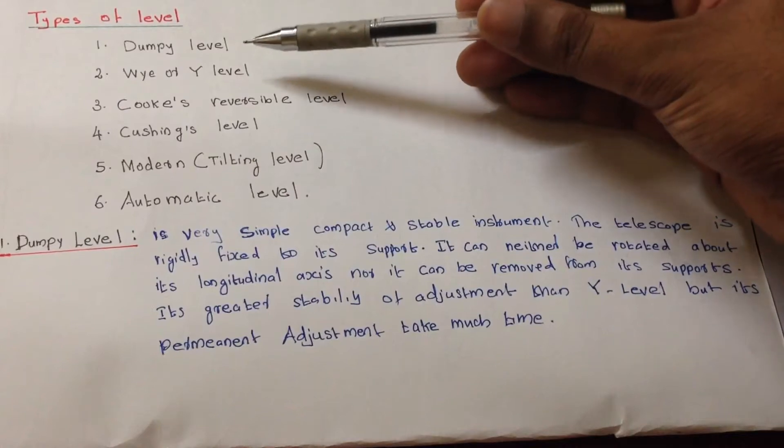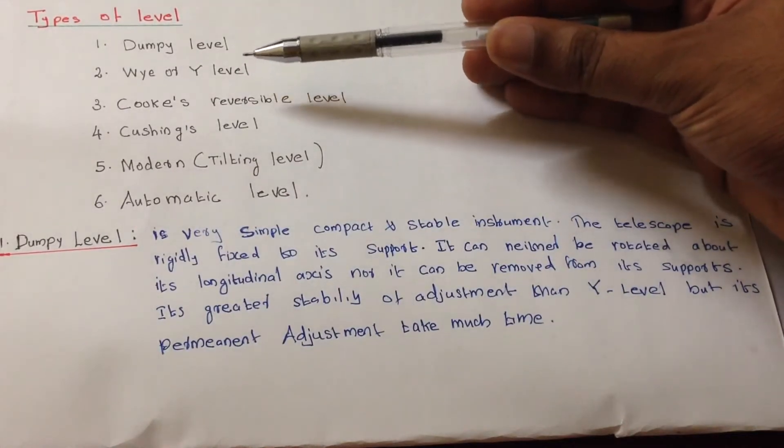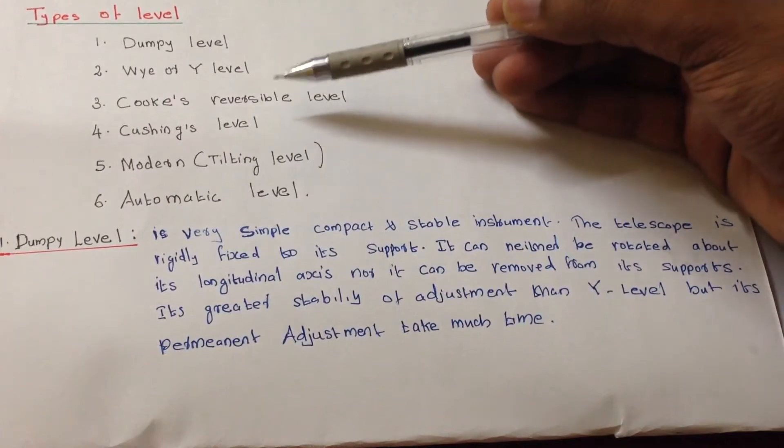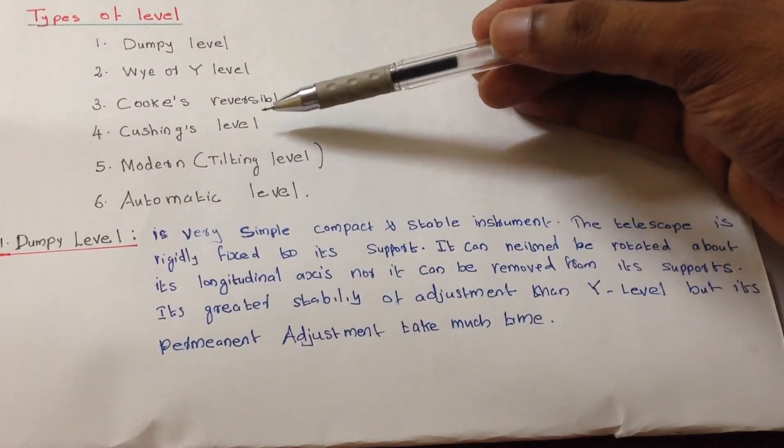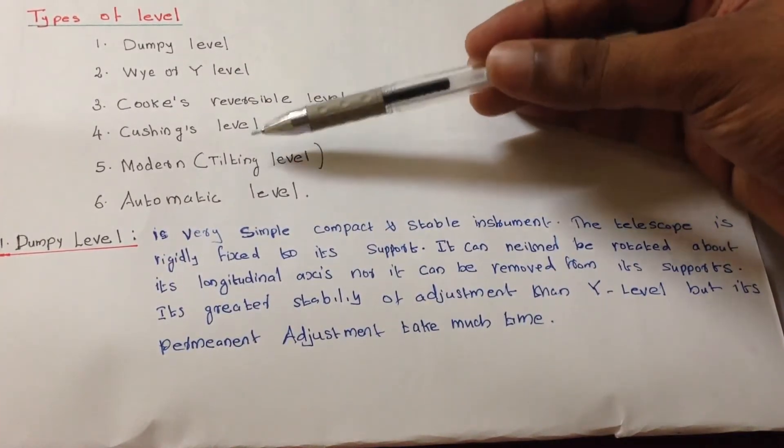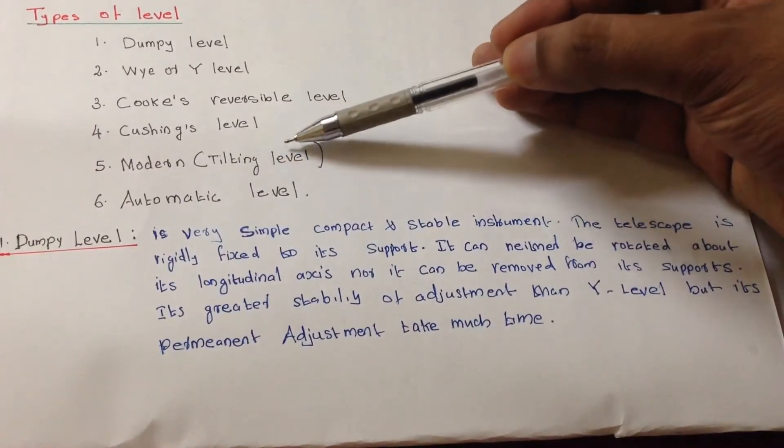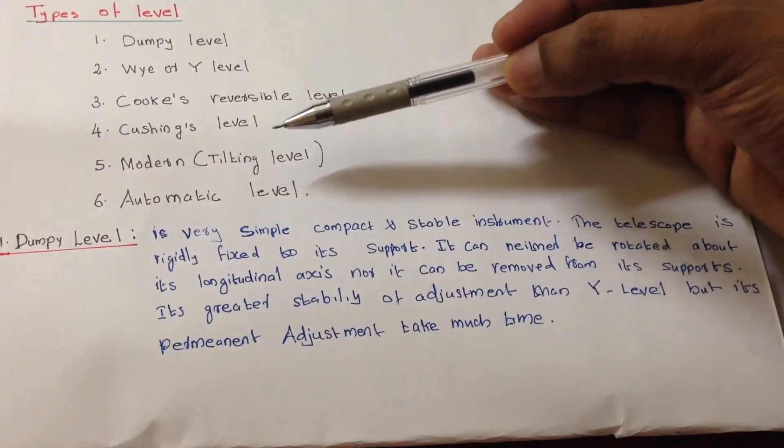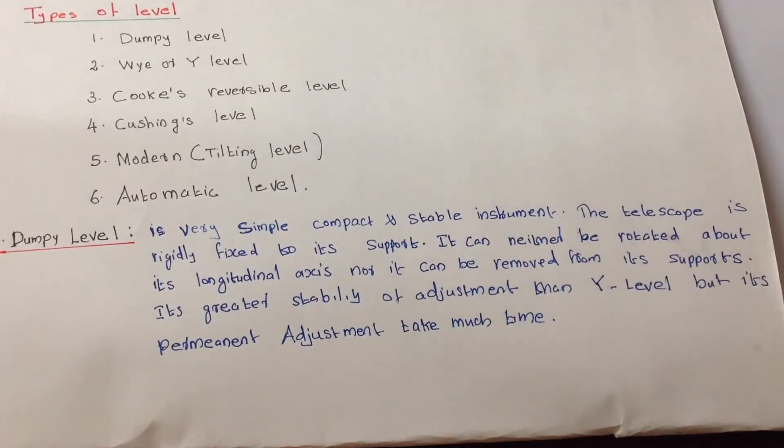First one is called dumpy level, second one is called Y level, third one is Cook's reversible level, fourth one is Cushing's level, fifth one is modern or tilting level, and sixth one is automatic level. In this video I am explaining about four levels which are most important.